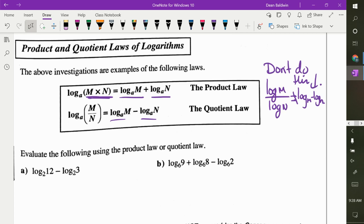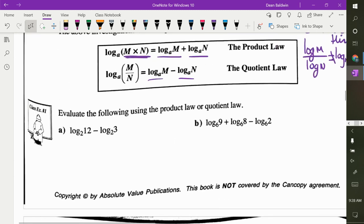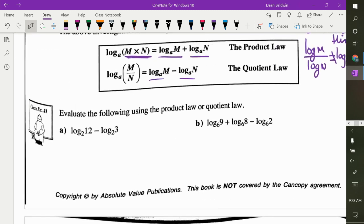I just want to point something out that students kind of mess up on every year. This does not equal this. This is different than this. Does everybody see that? This is two logs being divided. That does not mean you subtract the logs. It's only if the arguments are being divided.